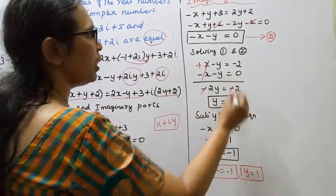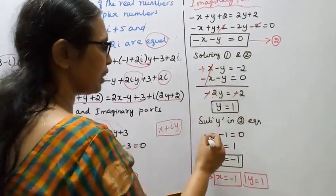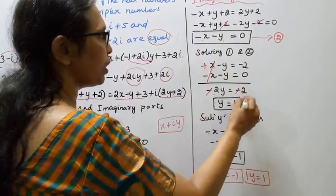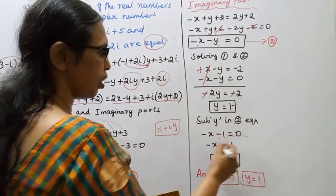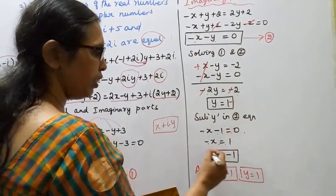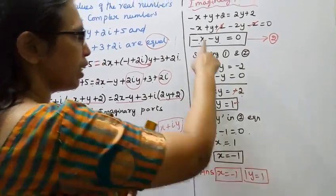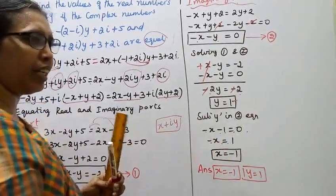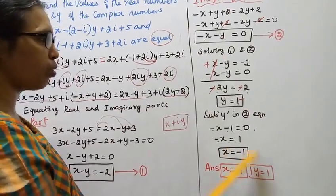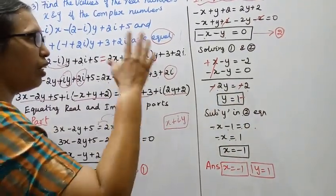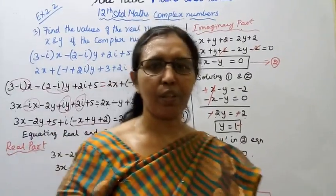Substituting y equals 1 into the second equation: minus x minus 1 equals 0, so minus x equals 1, therefore x equals minus 1. The final answer is x equals minus 1 and y equals 1.